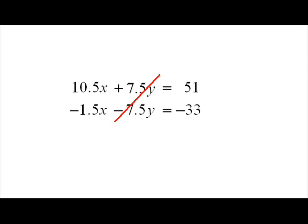In other words, here we're canceling out the y, and then we're going to use the x, and then use that x to find the y again. So we're adding, and the 7.5 plus a negative 7.5y cancel out.